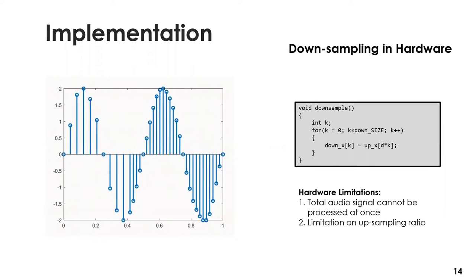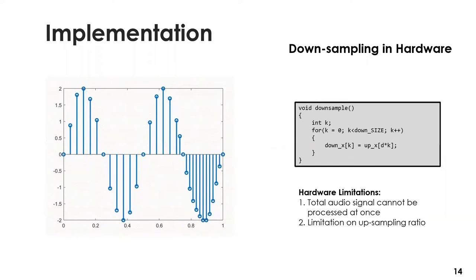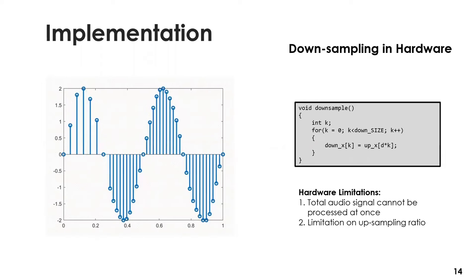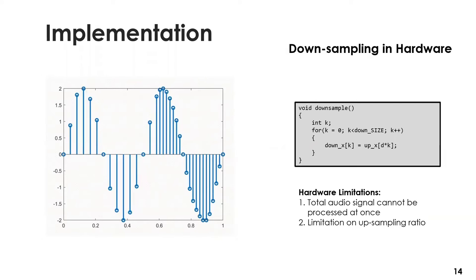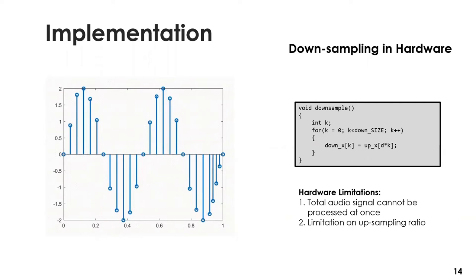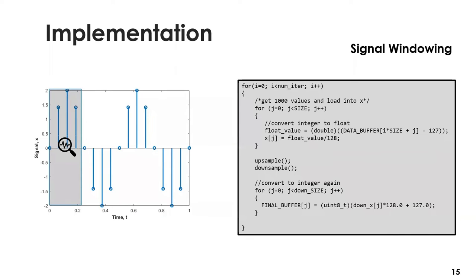There are some practical limitations when resampling is performed on hardware. Since we are processing a large audio signal having 64,000 samples, we cannot process the total signal at once because there is not enough memory on our board. Due to the same memory constraints, we cannot upsample the signal at any arbitrary ratio — if a very large ratio is chosen, the signal will not fit in memory. To satisfy the memory constraints, we decided to break the signal into equal-size slices and perform resampling on one slice at a time.